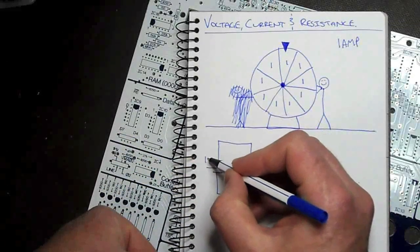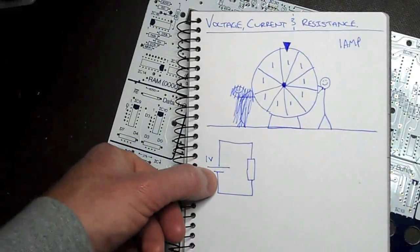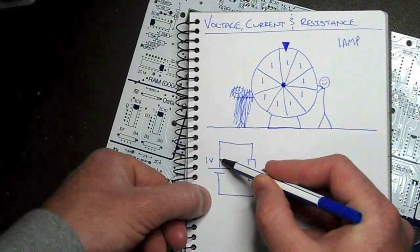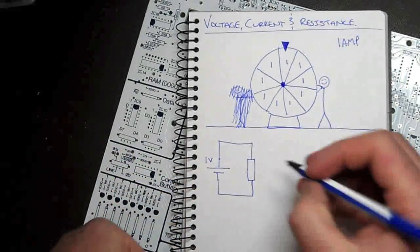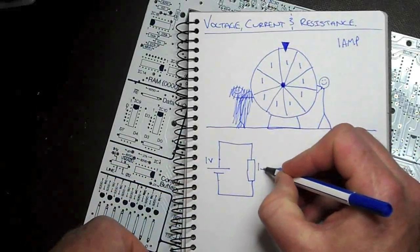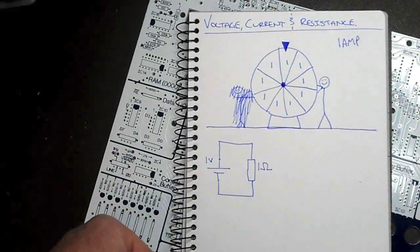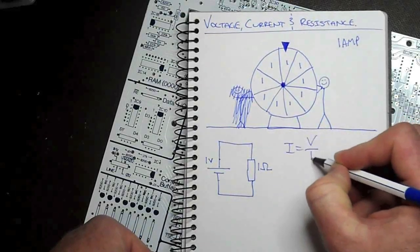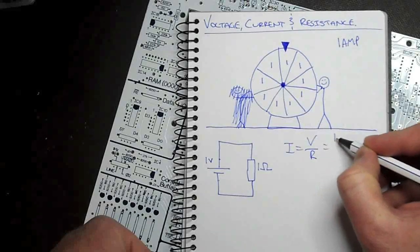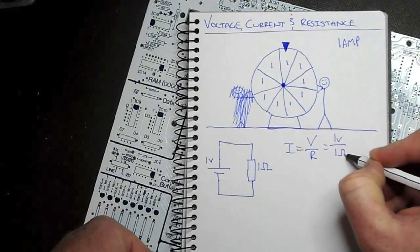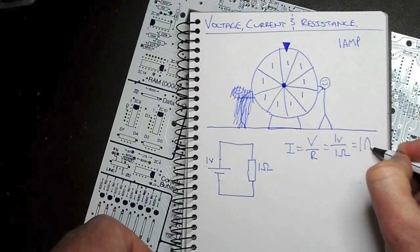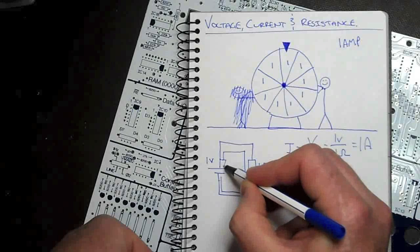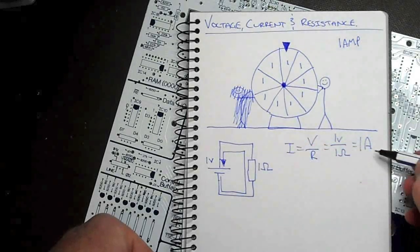So if I was to come along with one volt, so the difference in potential between this point and this point is one volt. Let's put a really low value of resistor in, of one ohm. We know that current equals voltage divided by resistance. So one volt divided by one ohm equals one amp. In this circuit, we will get current flowing in the order of one amp.